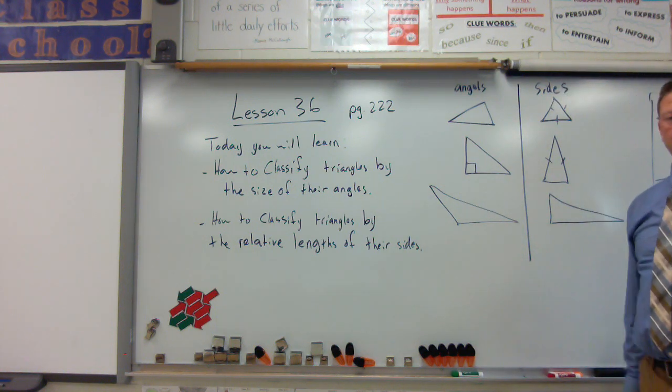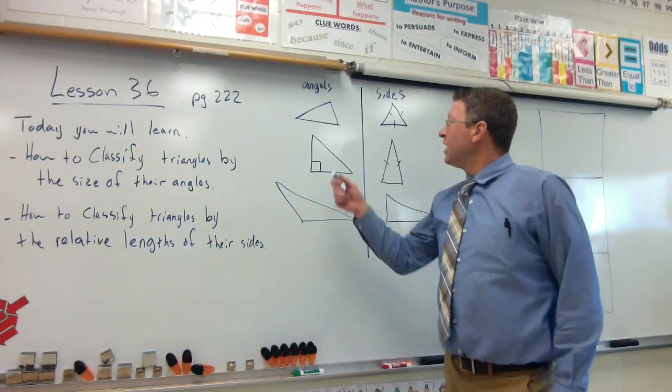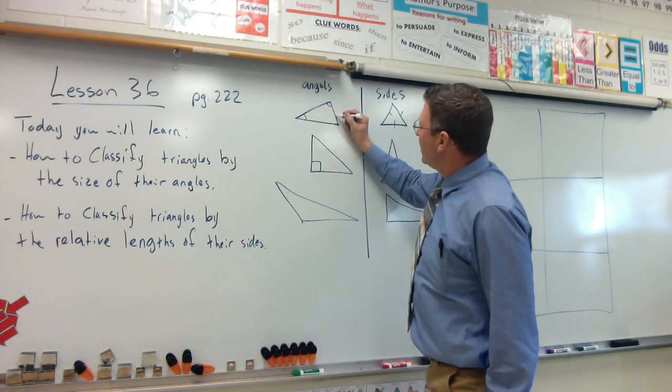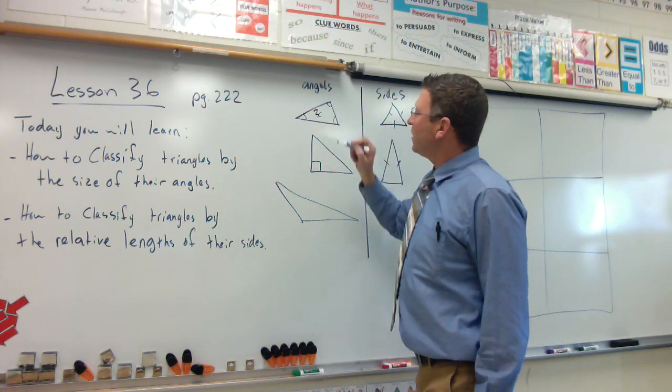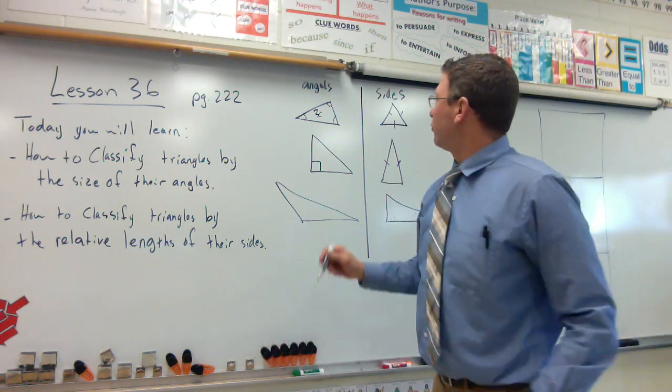So there's two different groups, and a lot of times those two groups correlate with each other. Let's take a look at the first one. If you're looking in your book, this first one has an acute angle, an acute angle, an acute angle. If it has three acute angles, then it is called an acute triangle.